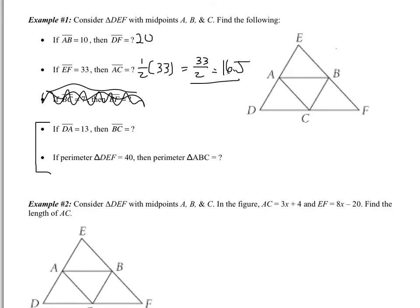Okay, you should have had a chance to try these on your own. Let's see how we did. If DA is 13, find BC. Well, we know that point A is a midpoint. So if DA is 13, that means AE is 13, which means the entire side is 26. BC, then, is going to be half of 26, which is 13 again.